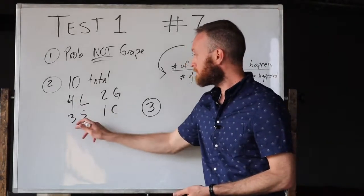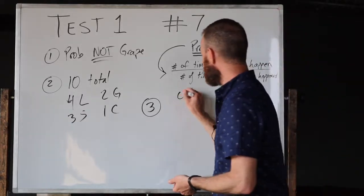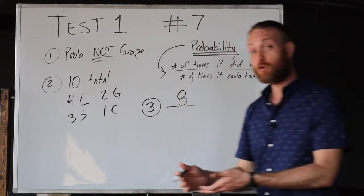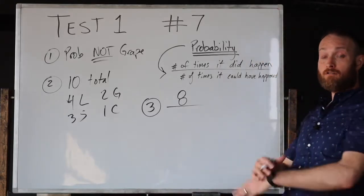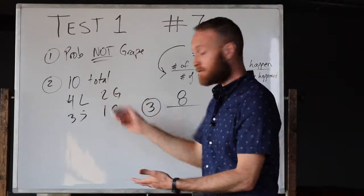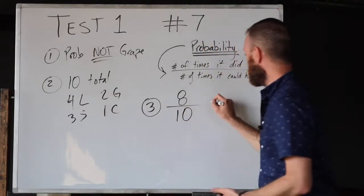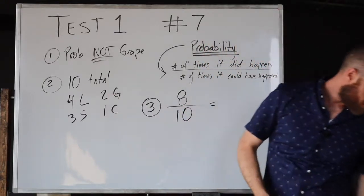...four plus three plus one is eight. That's the total number that are not grape. What's the total number of options? Ten. We already know that. So eight out of ten - is that one of our answer choices? It's not.